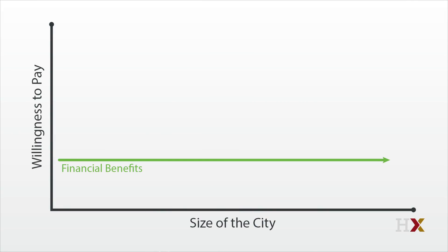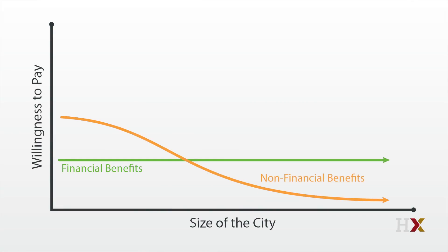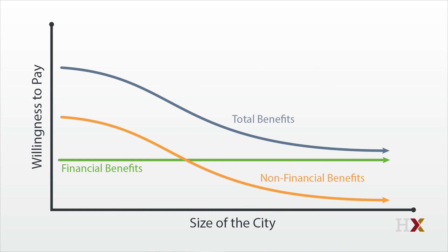How do we handle this graphically? Assume again that wages are flat, and that urban quality of life is declining with the number of people in the city. Add those two curves together, and you get that the demand for city life is declining with the size of the city.